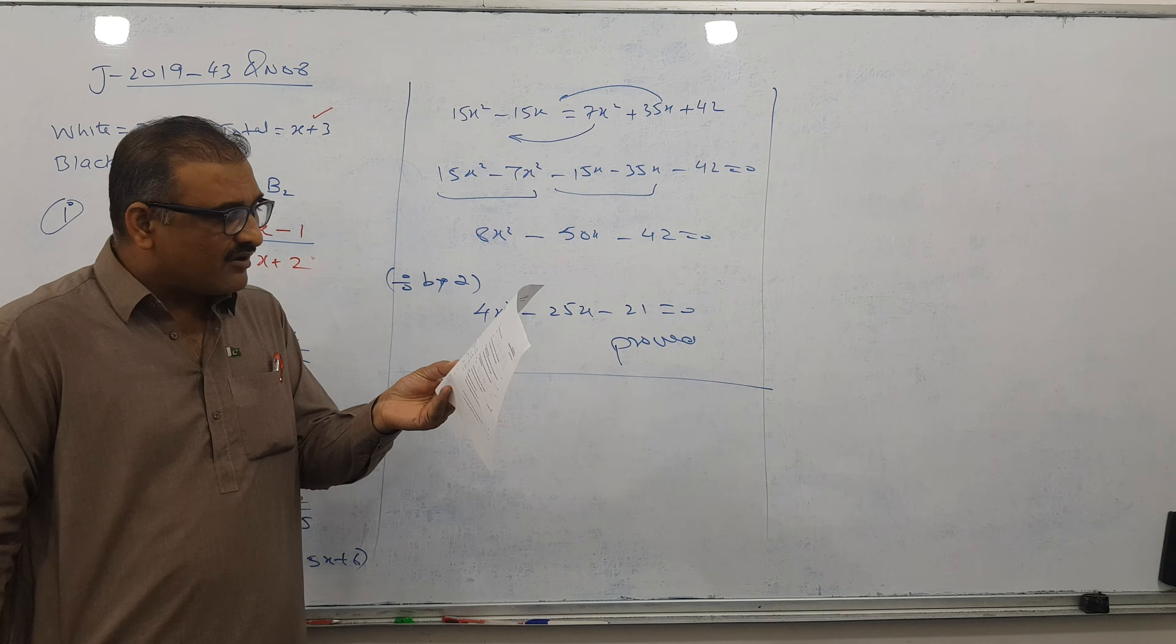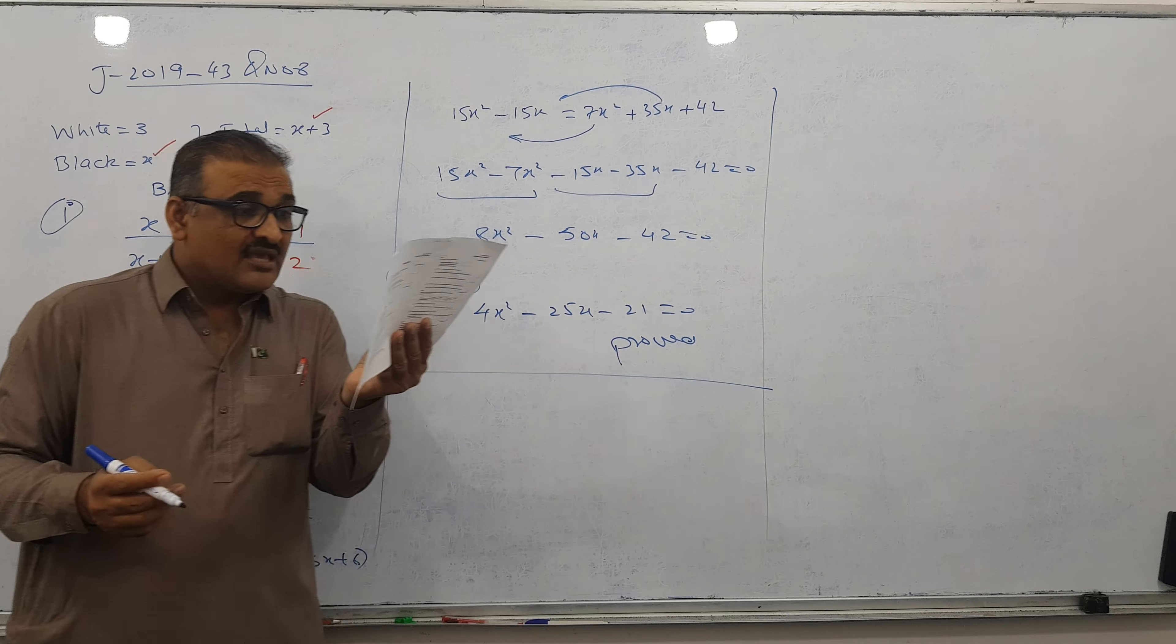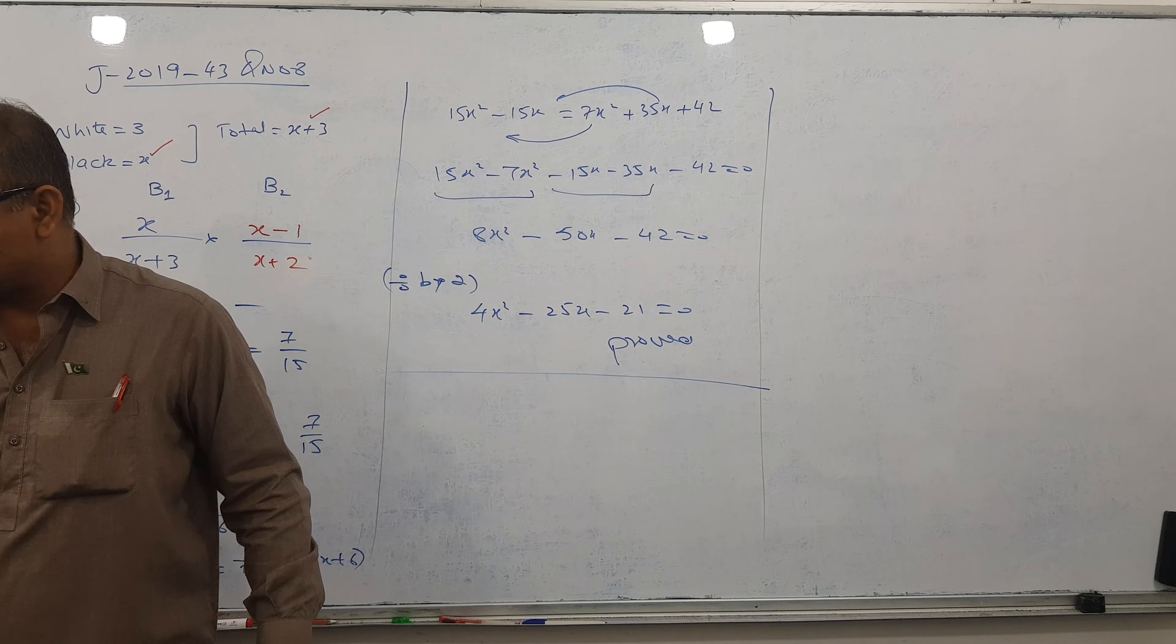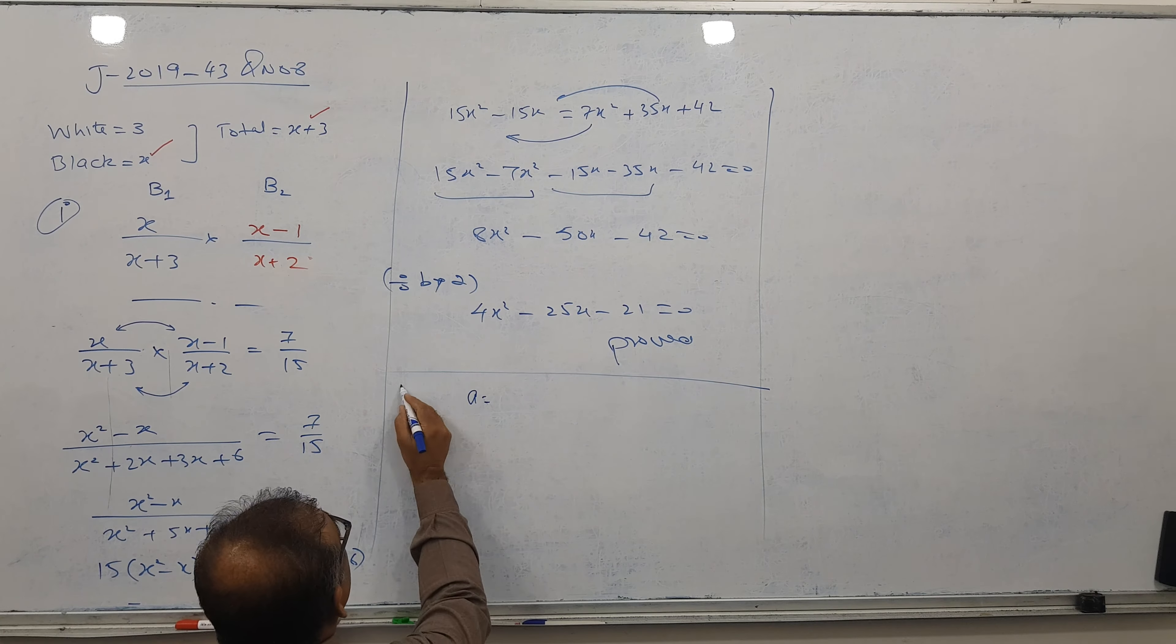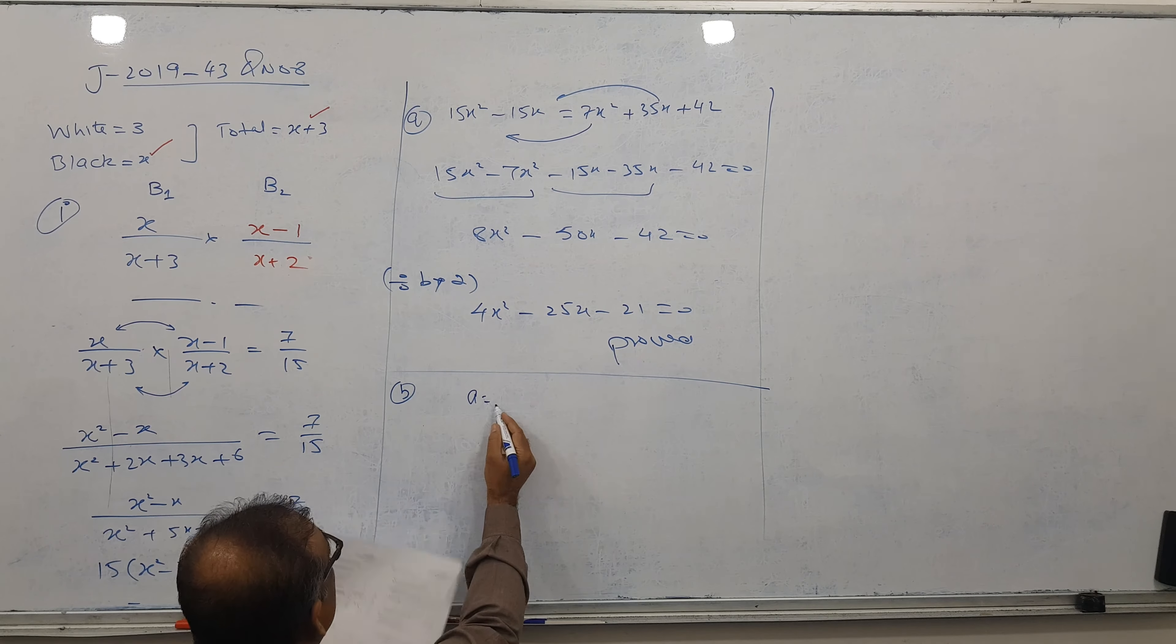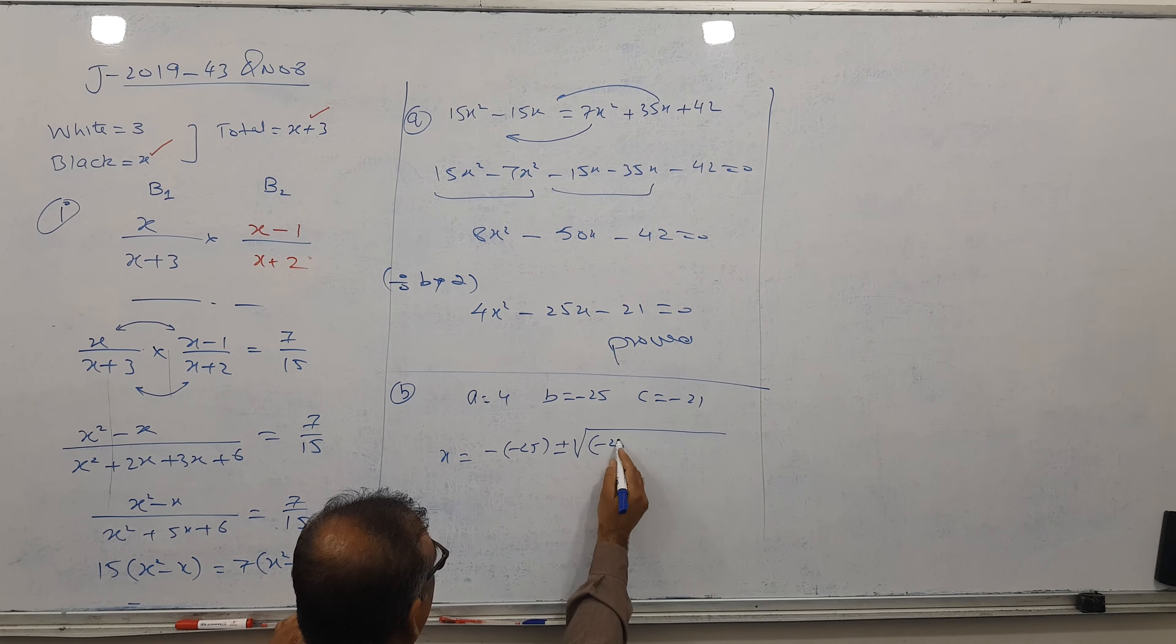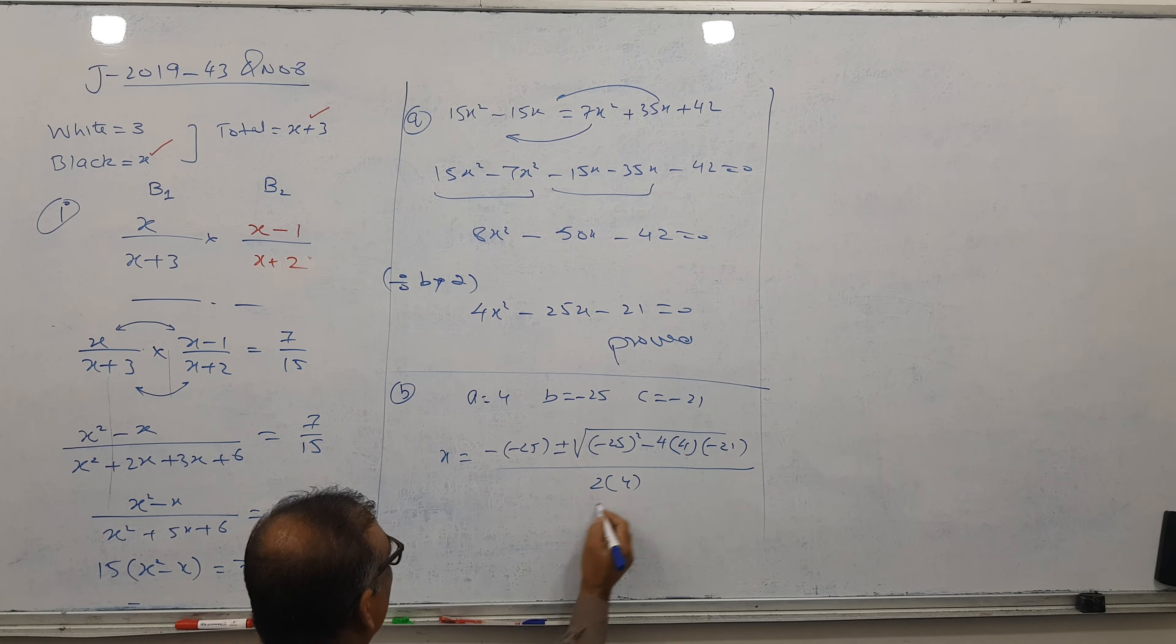After that he said write down the number of black counters in the bag, so we're looking for X values. He didn't mention what to do, so we can apply factorization or quadratic formula. Let's use the formula. A is 4, B is minus 25, C is minus 21. X equals minus B plus or minus square root of B squared minus 4AC all over 2A.